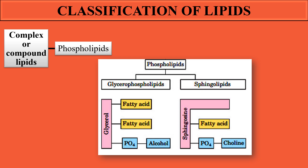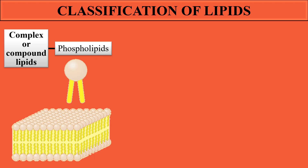Phospholipids are further classified based on the type of alcohol used. In glycerophospholipids, the alcohol is glycerol, while in sphingophospholipids, the alcohol is sphingosine. Both types are composed of fatty acids, alcohol, and an attached phosphate group. Sometimes cholesterol may also be used as the alcohol, so they are classified into glycerophospholipids and sphingophospholipids.